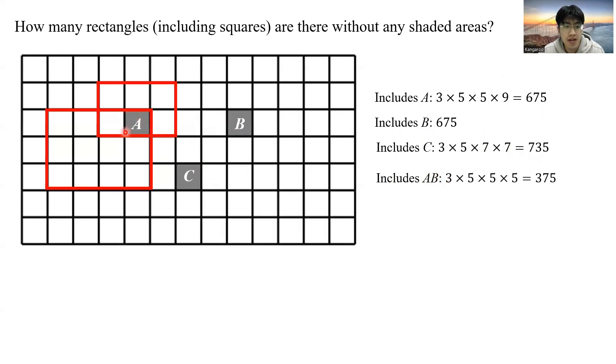So we still need to determine how many such rectangles includes both AB. So all those rectangles include both AB. To the top, there are three lines, which is the three here. And to the left, we have one, two, three, four, five.